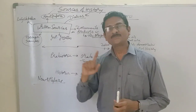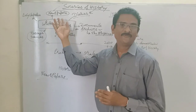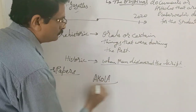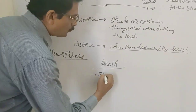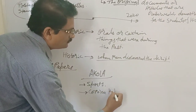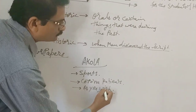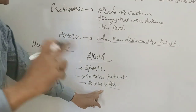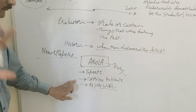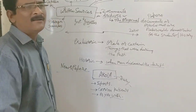Each of you must be having one or the other newspaper. If not, definitely, if you subscribe to the channels of the newspapers, you will get the information. Related to our own city, that is Akola — related to only Akola — may it be related to sports, or Corona patients, or as you wish, whatever title you want — choose one thing.